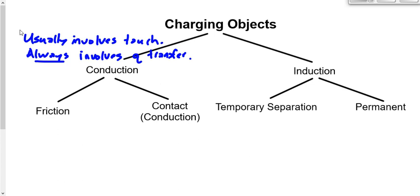When rubbing two neutral objects together and one becomes negative four, that object gained electrons. The one that becomes positive four has lost electrons — it hasn't gained protons. You can't gain protons because protons are too tightly bound in the nucleus by the strong nuclear force. Electrons are bound electrostatically, which is not quite as strong, so it's easier to move them.